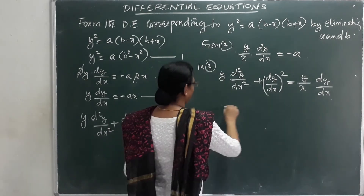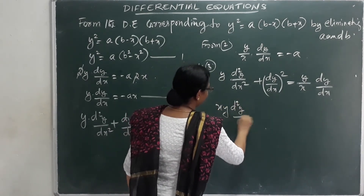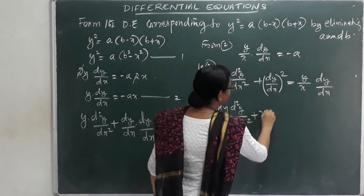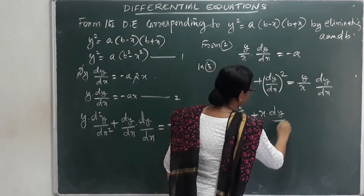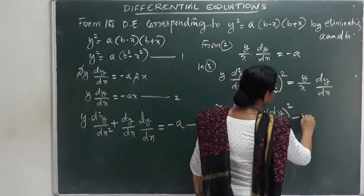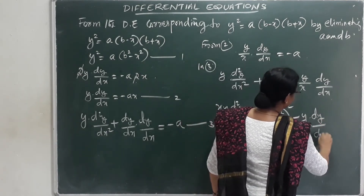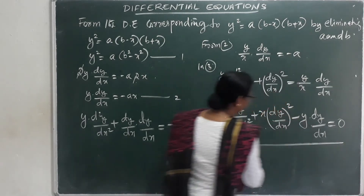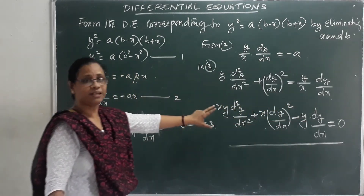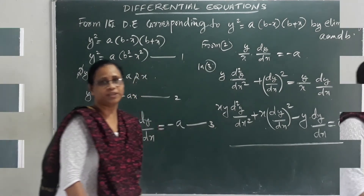Multiplying through by x: xy·(d²y/dx²) + x·(dy/dx)² − y·(dy/dx) = 0. This is the required differential equation after eliminating both a and b.